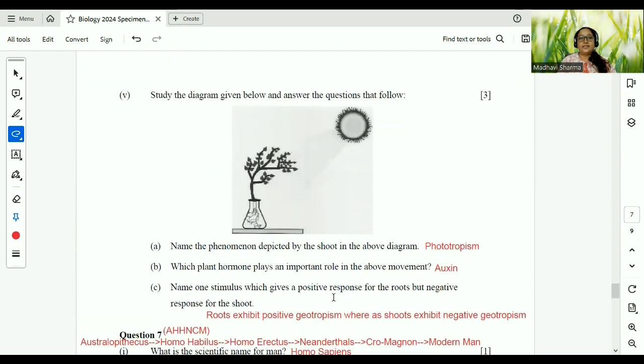Question number 5. Name the phenomena depicted. Phototropism. Photon, light, sunlight. Phototropism. Hormone playing is auxins. Auxins exhibit growth. One stimulus which gives positive response for roots but negative response for shoot has to be geotropism, children. Geo towards the earth. It has to be positive for the roots.